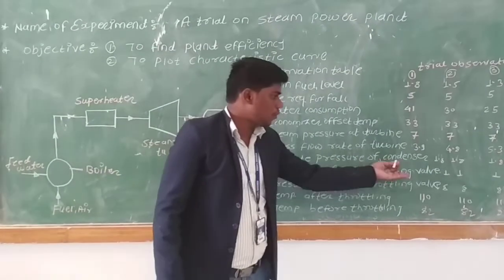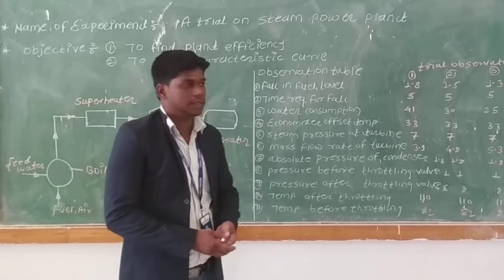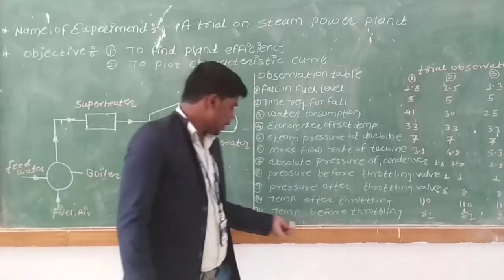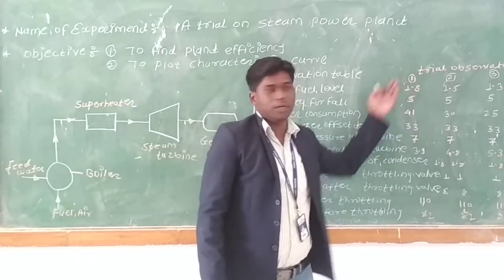Pressure before throttling valve is 1, 1, 1. Pressure after throttling valve is 8. Then temperature after throttling and temperature before throttling. This is the observation table.